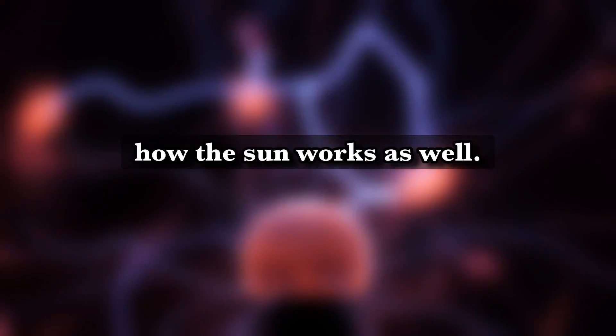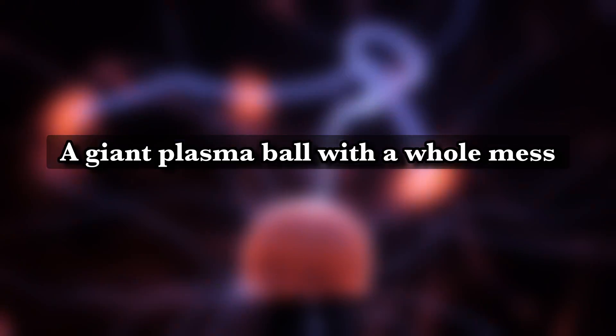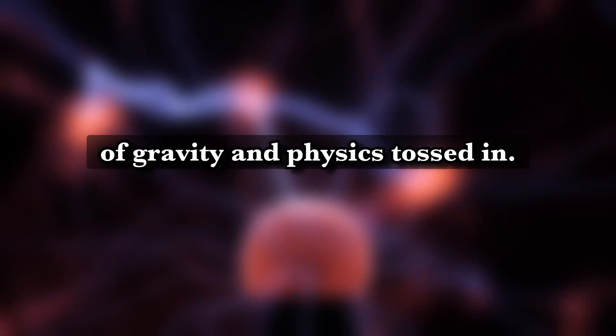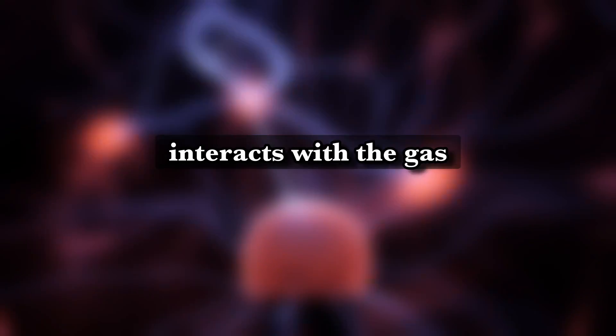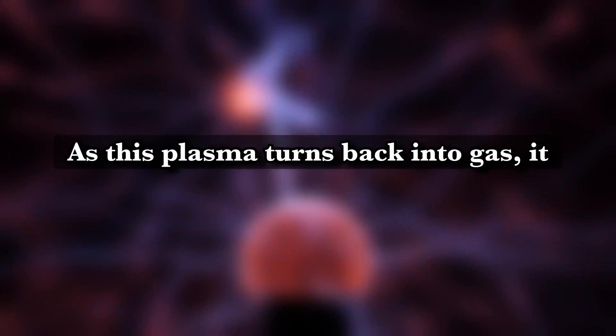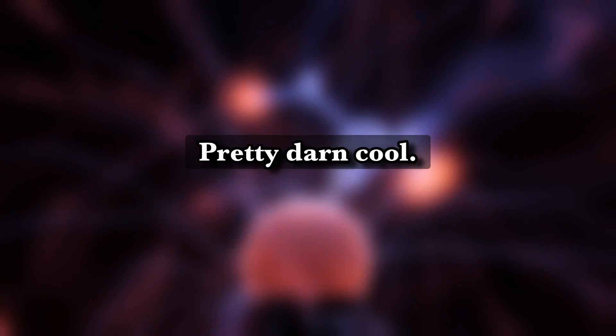This is almost exactly how the sun works, as well. A giant plasma ball with a whole mess of gravity and physics tossed in. So, the electricity of the Tesla coil interacts with the gas surrounding it, creating plasma. As this plasma turns back into gas, it glows with the resulting release of photons. Pretty darn cool.